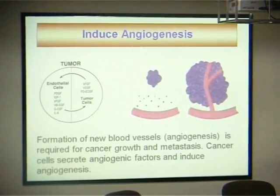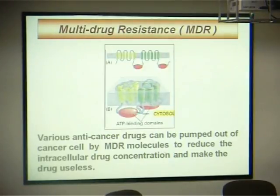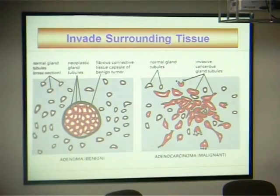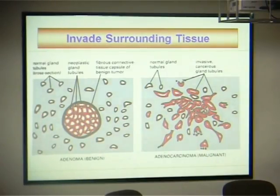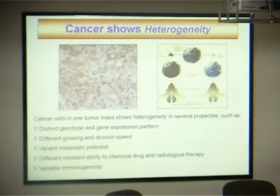Angiogenesis is very important for cancer growth and metastasis. Multi-drug resistance is also a very important property of cancer. Cancer cell surfaces have MDR molecules. These molecules can pump out various kinds of drugs. Cancer cells also evade surrounding tissue without a capsule. This is a benign tumor and this is a malignant cancer. Metastasis to liver and lung is most frequent.